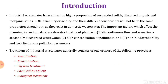Industrial wastewater may have either too high a proportion of suspended solids, organic and inorganic solids, BOD, alkalinity, or acidity, and their different constituents will not be in the same proportion throughout as they exist in domestic wastewater. The important factors which affect planning for an industrial wastewater treatment plant are discontinuous flow, sometimes seasonally discharged wastewater, high concentration of pollutants, non-biodegradability, toxic substances, and some pollution parameters.